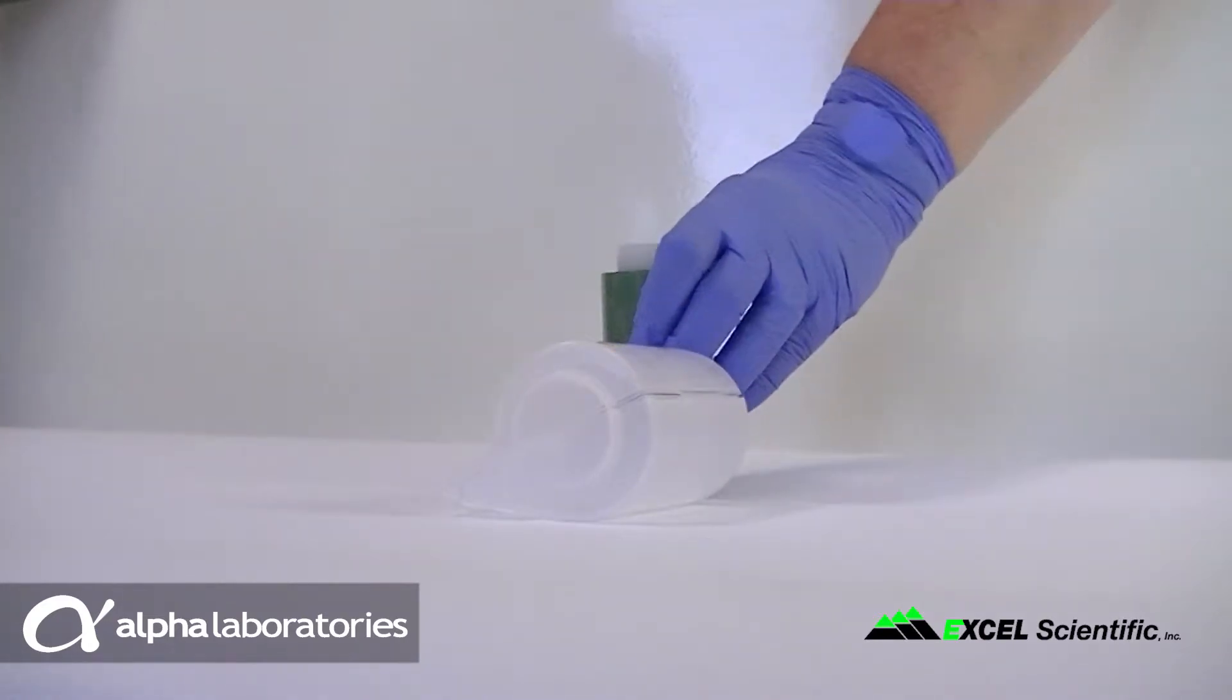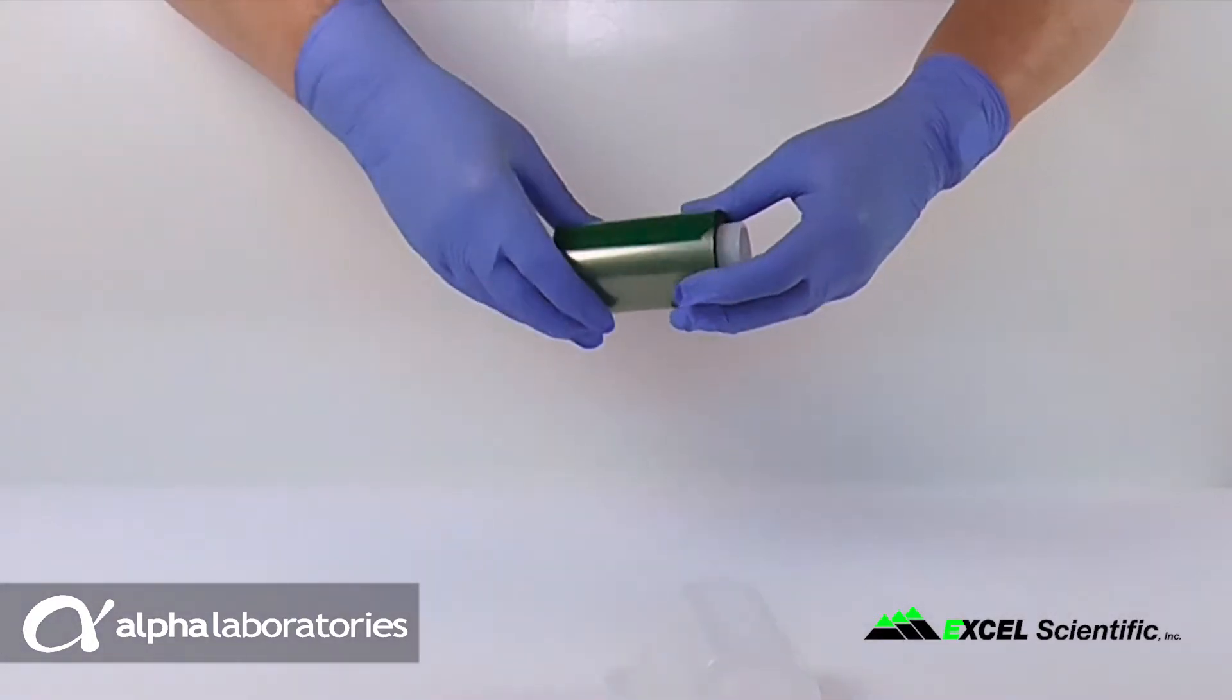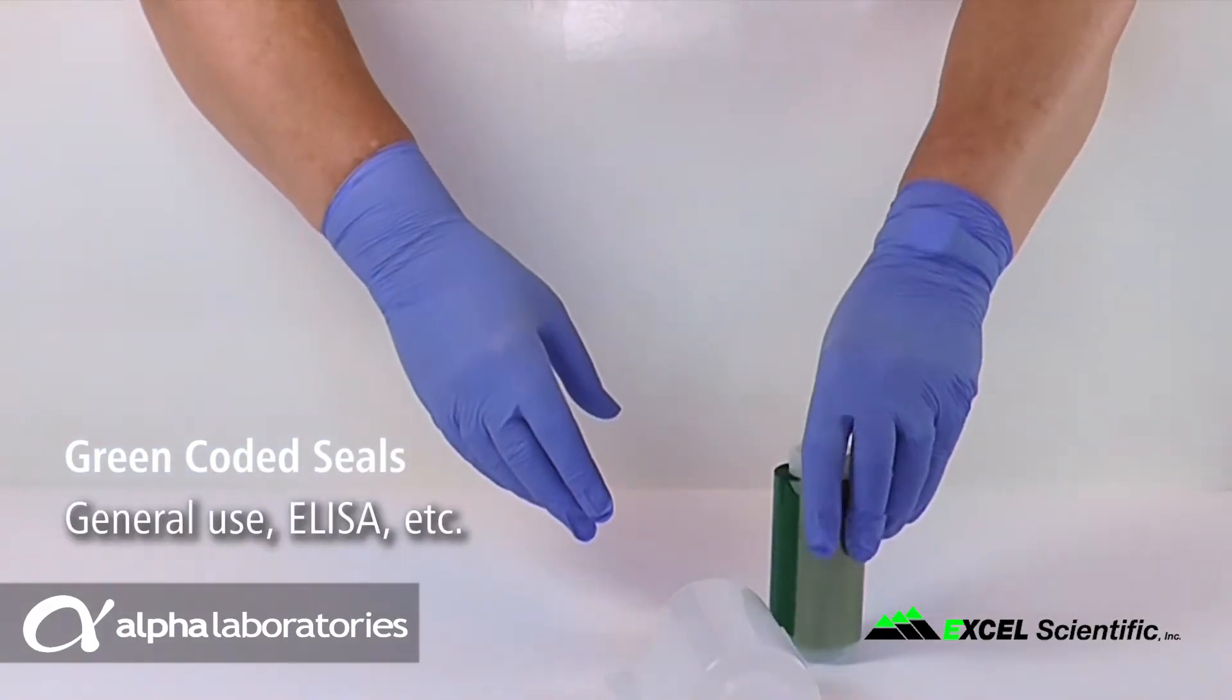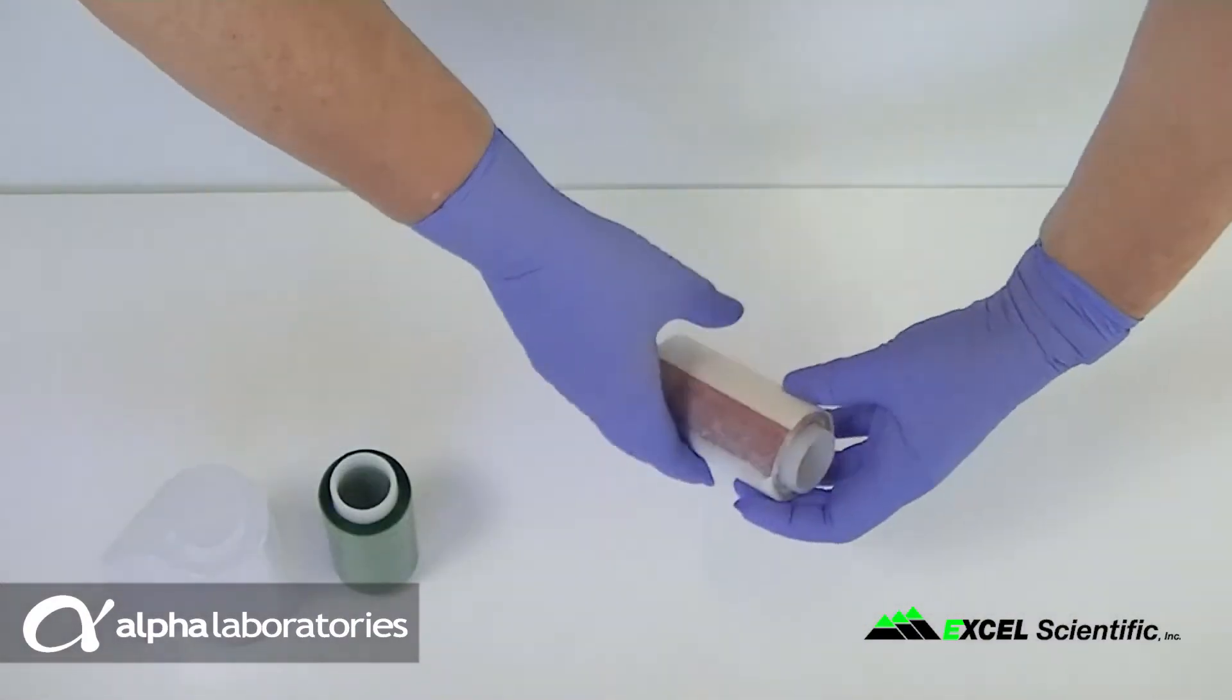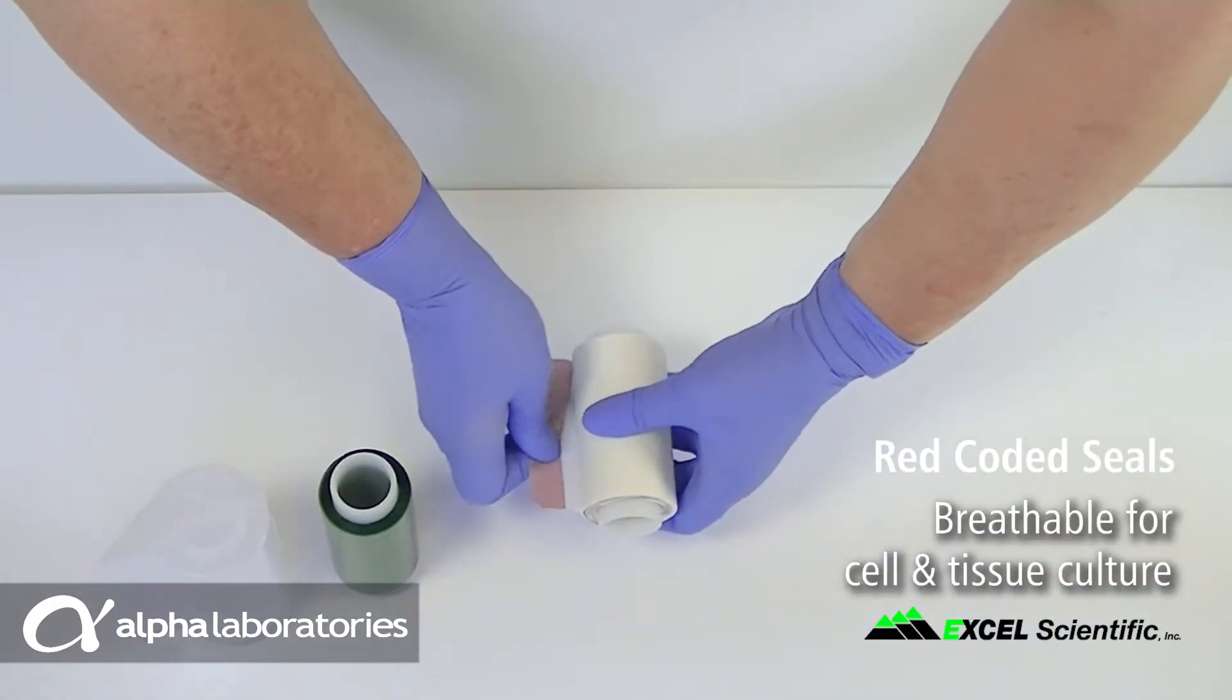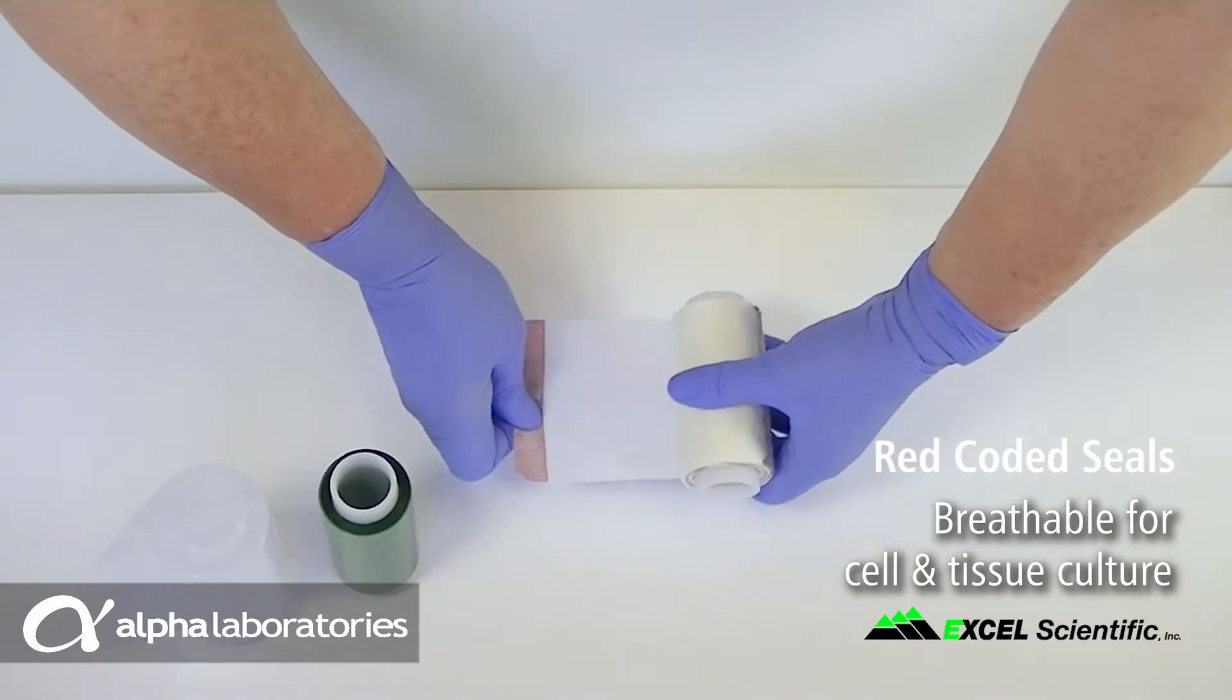Two types of sealing film are available in this format. The green color coded films are for ELISA and general incubation applications. The red color coded films are a breathable film allowing gaseous exchange for cell and tissue culture applications.